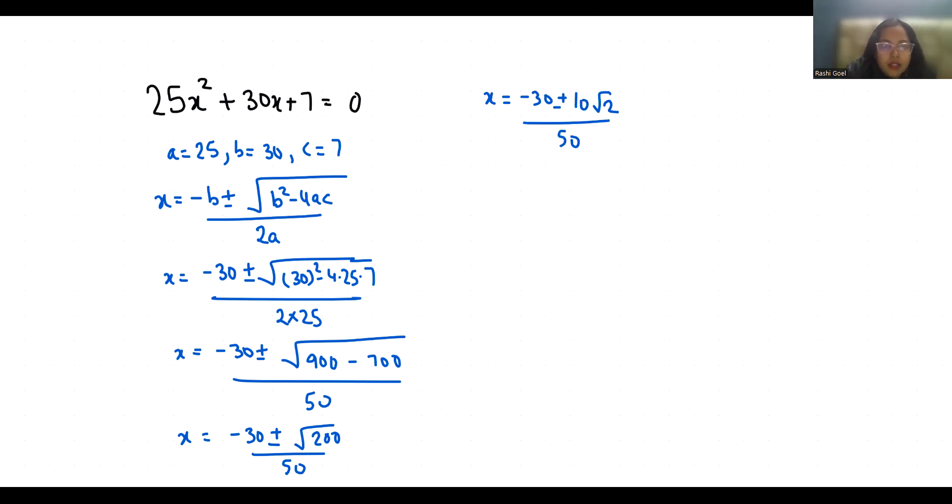So x = (-30 + 10√2)/50 or x = (-30 - 10√2)/50. Now if we take 10 as common: (-30 + 10√2)/50 becomes 10(-3 + √2)/50. So x = (-3 + √2)/5.